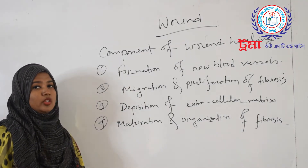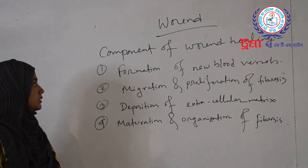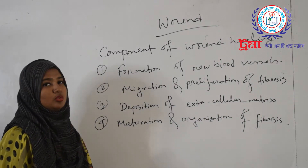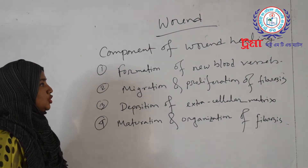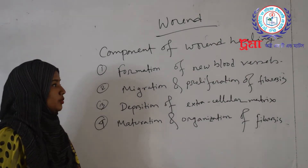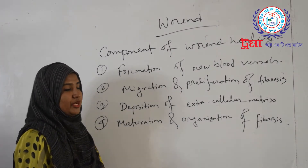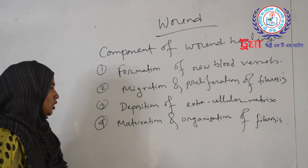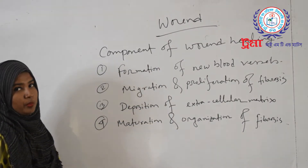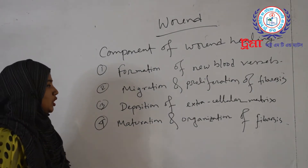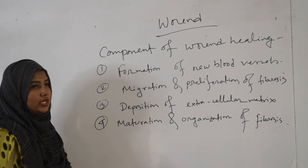The components of wound healing are: first, formation of new blood vessels; second, migration and proliferation of fibroblasts; third, deposition of extracellular matrix; and fourth, maturation and organization of fibrosis.